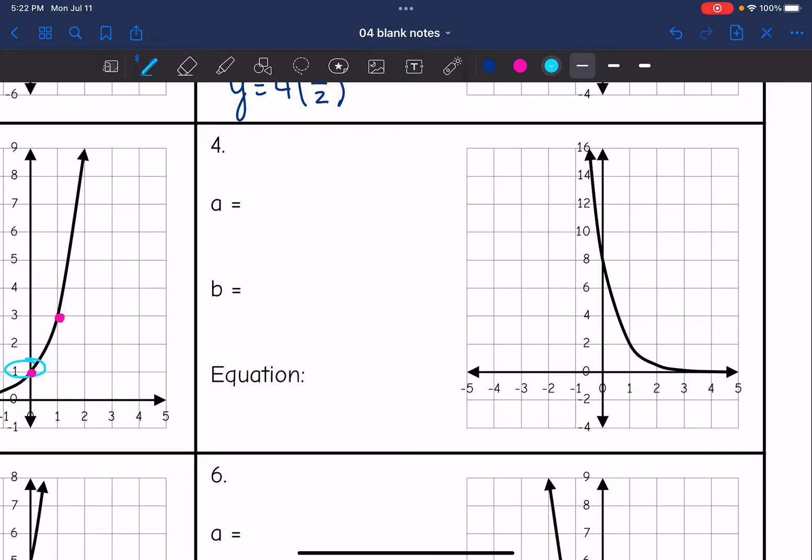All right, next one, our y-intercept is 8. And then to find the common ratio, I will do y2 divided by y1 with two consecutive points. So I have the point with the y-intercept (0, 8). And then it looks like the point after that is (1, 2). So I'm going to set up a table with the point (0, 8) and (1, 2). And there is y1 and y2.